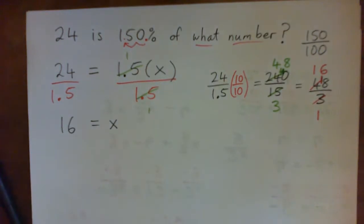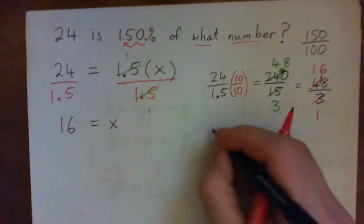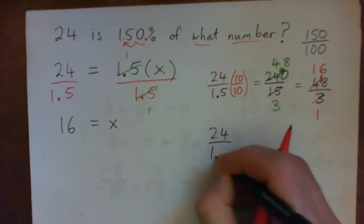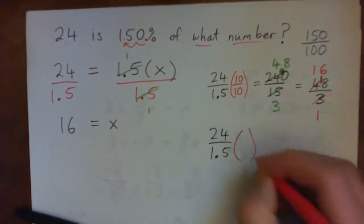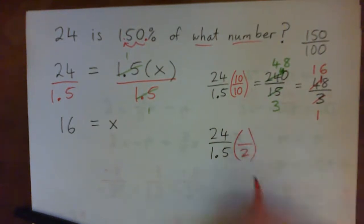So X equals 16. I was just going to go over, I mean, another way was 24 over 1.5. We could have, for example, seen, look, if I multiply this by 2.